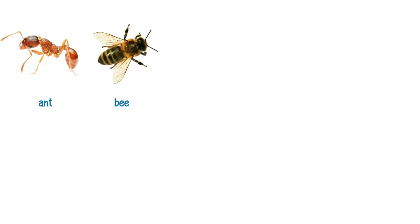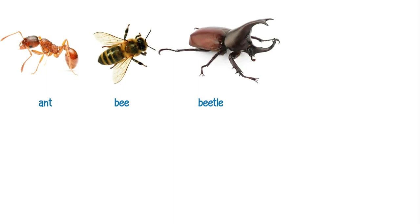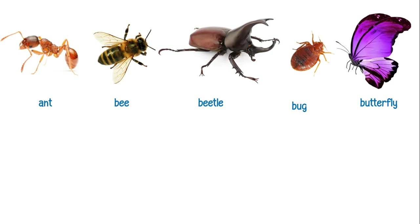This is an ant. This is a bee. This is a beetle. This is a bug. This is a butterfly.